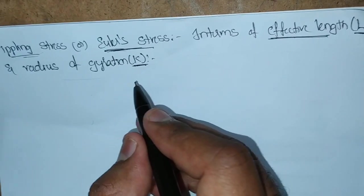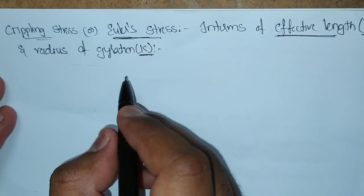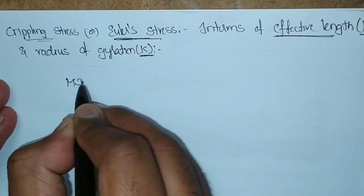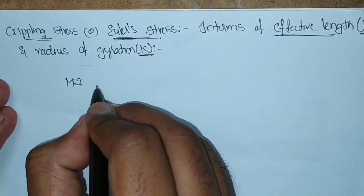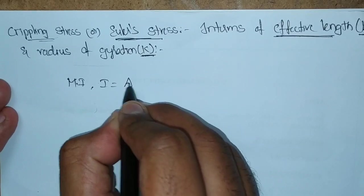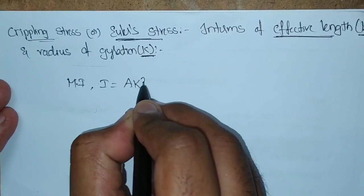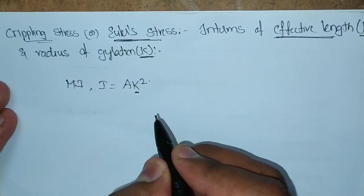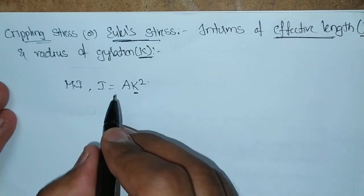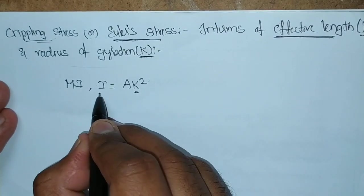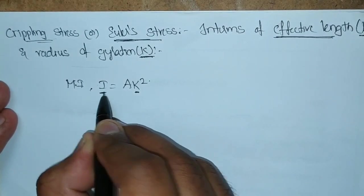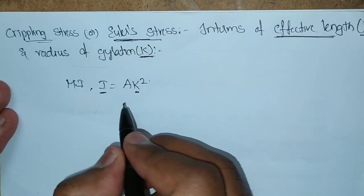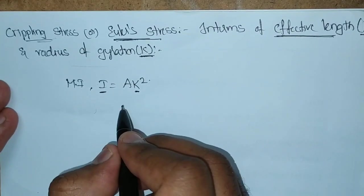For this type of sections, the moment of inertia can be written as I is equal to AK squared, where K is nothing but radius of gyration, and I is the least value of moment of inertia taken in these terms.